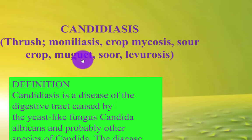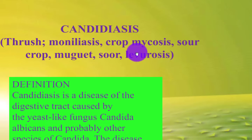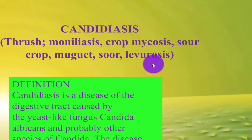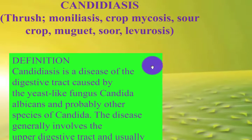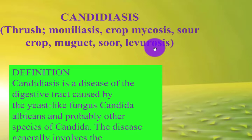Candidiasis, thrush, monoliasis, group mycosis — also known by alternative terms such as sauerkraut, magwit, sore, and liverosis.